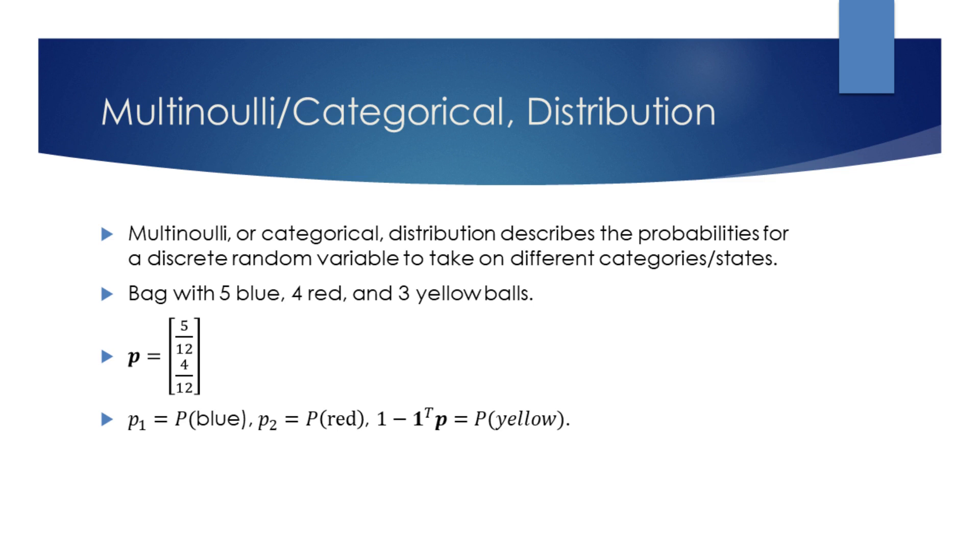Essentially, categorical distribution can be used to describe the probabilities of discrete outcomes, such as color.